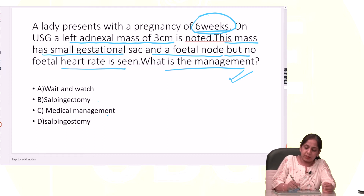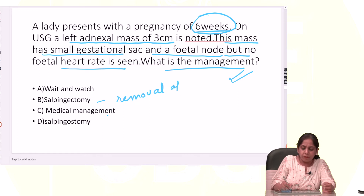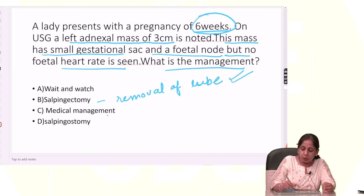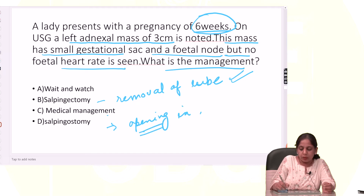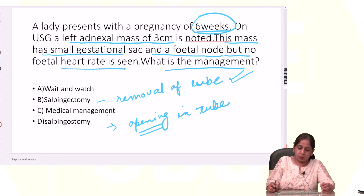Salpingectomy is removal of the tube. Salpingostomy is making an opening in the tube — creating an ostium, salpingostomy.